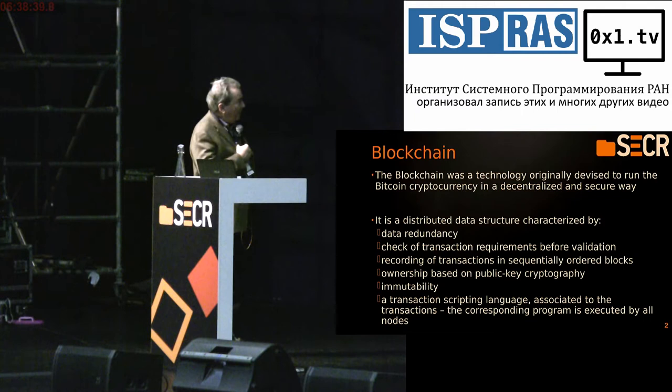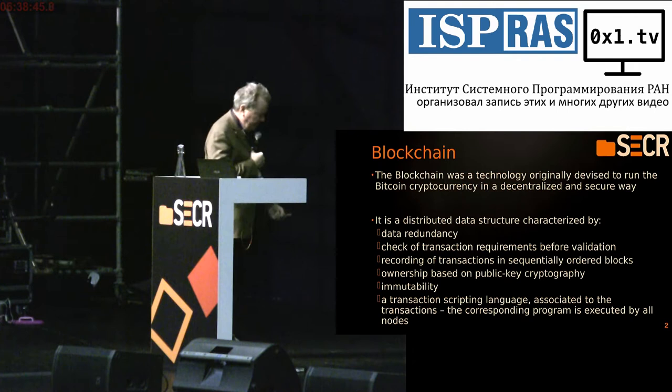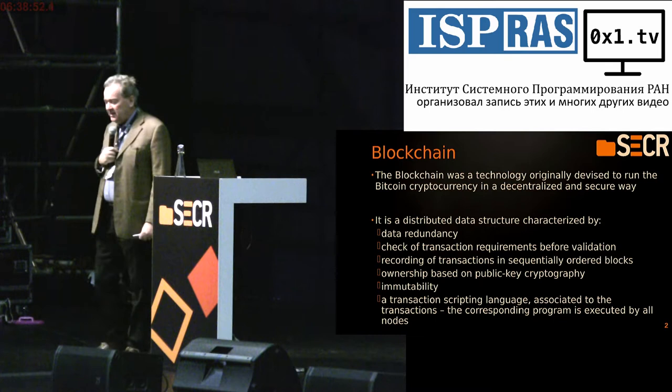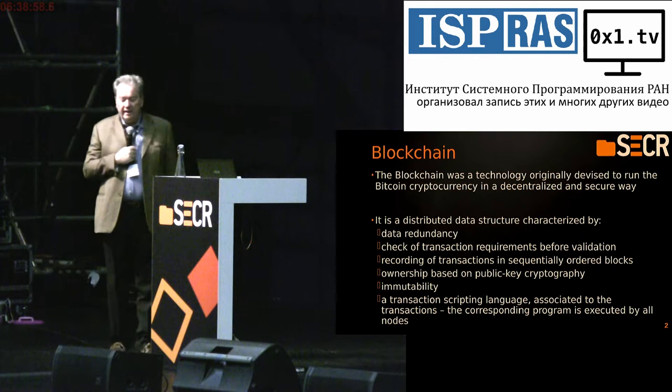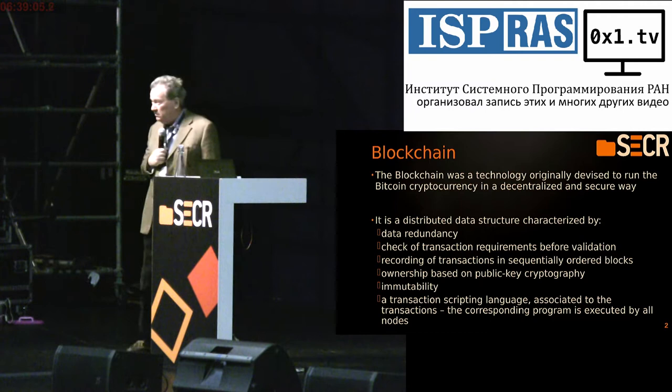The blockchain is immutable. Once written, it cannot be modified. And for the blockchains which are able to run programs — which are called smart contracts — typically Ethereum, which is the most important blockchain today to run programs, it's possible to write these programs in a scripting language and execute the program on every node.